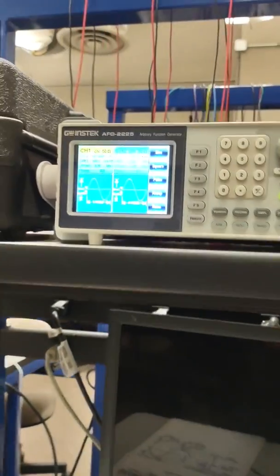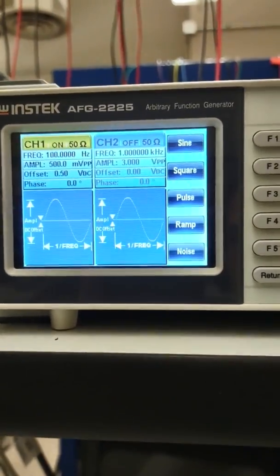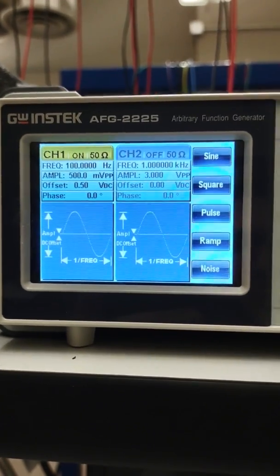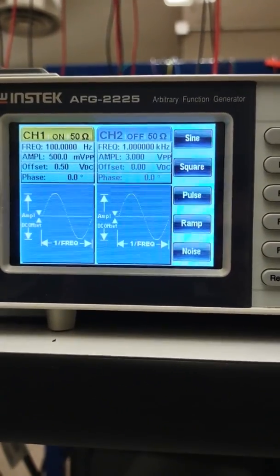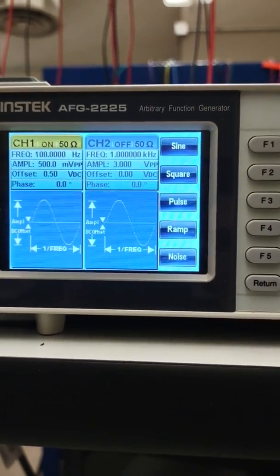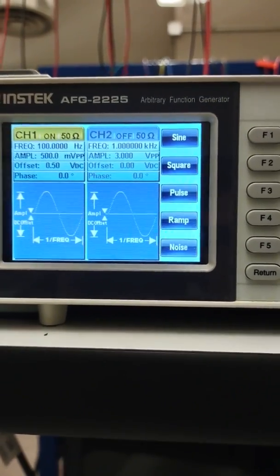So this is something to look for whenever you're setting these things. Sometimes when you ask for an amplitude, it will output double what you input. Same goes for if you need an offset of a certain value, you might get double the offset on the output as well.